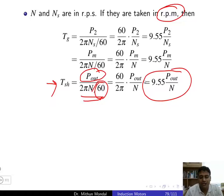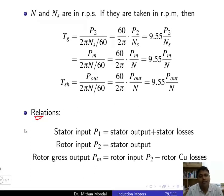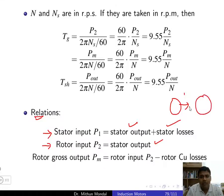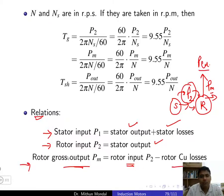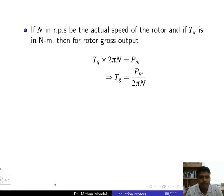Key relationships in an induction motor: stator input P1 equals stator output plus stator losses. Rotor input P2 equals stator output — whatever the stator outputs becomes the rotor input. Rotor gross output Pm equals rotor input P2 minus rotor copper loss. If m (speed in RPS) is the actual rotor speed and Tg is in Newton-meters, then Pm = Tg × 2π × n.